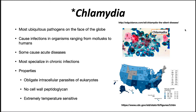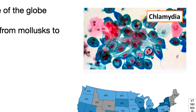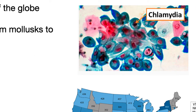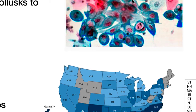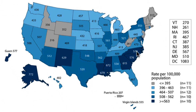Chlamydia are obligate intracellular parasites of eukaryotes. They have no cell wall peptidoglycan and they're extremely temperature sensitive. Shown on the right here is an example of chlamydia growing inside a cell, and also the prevalence of sexually transmitted infections per hundred thousand in the United States — and as you can see, it's quite common.